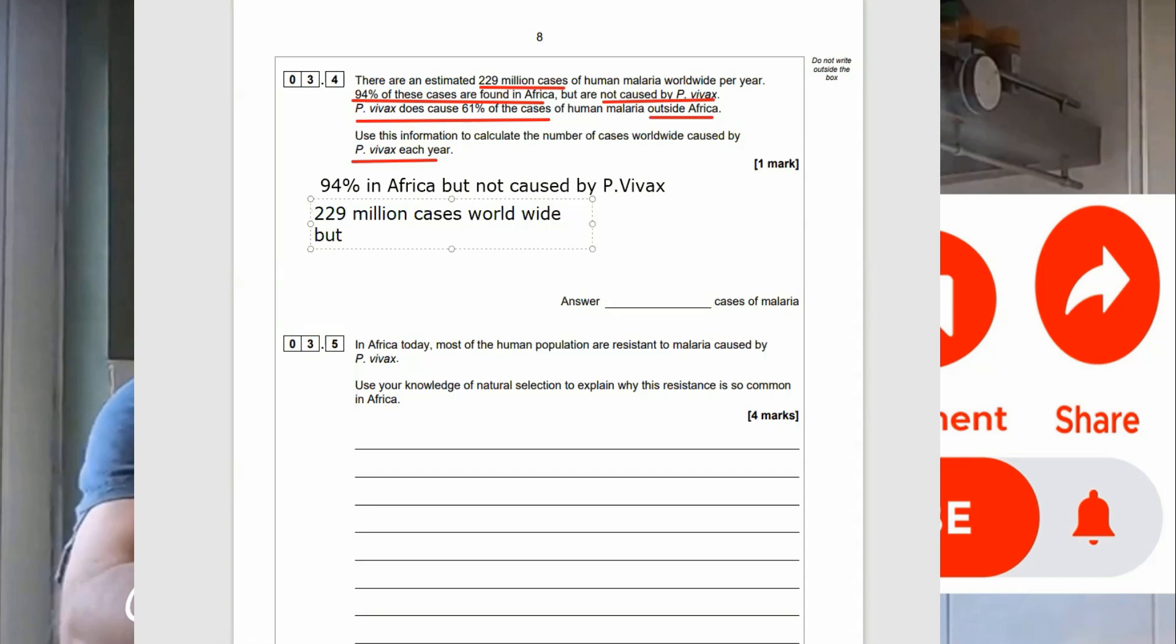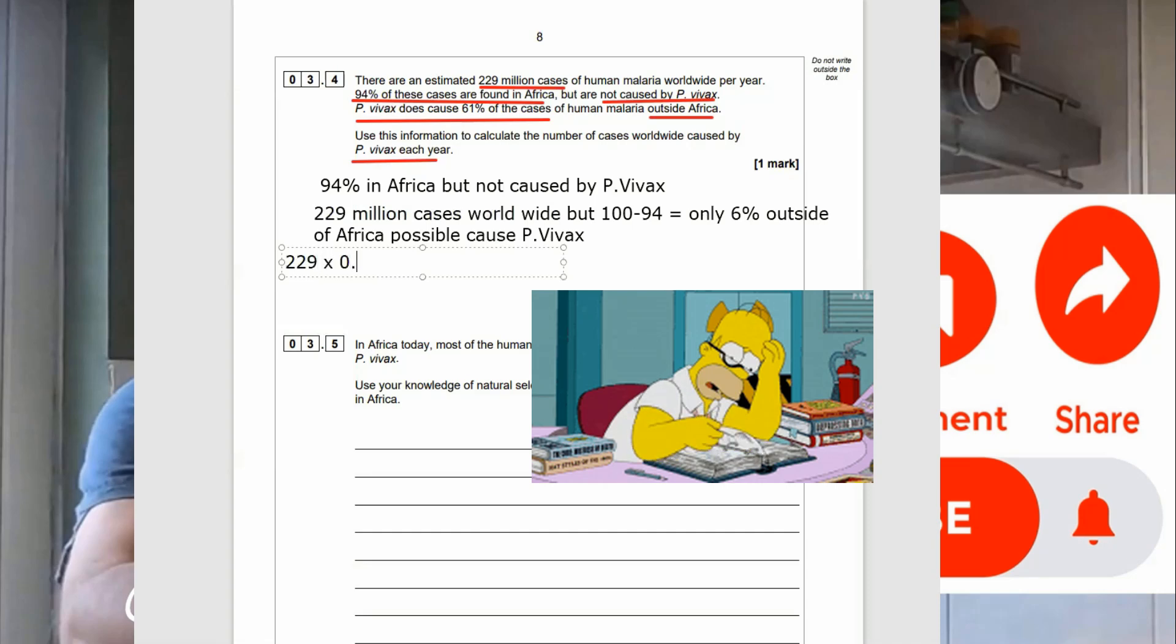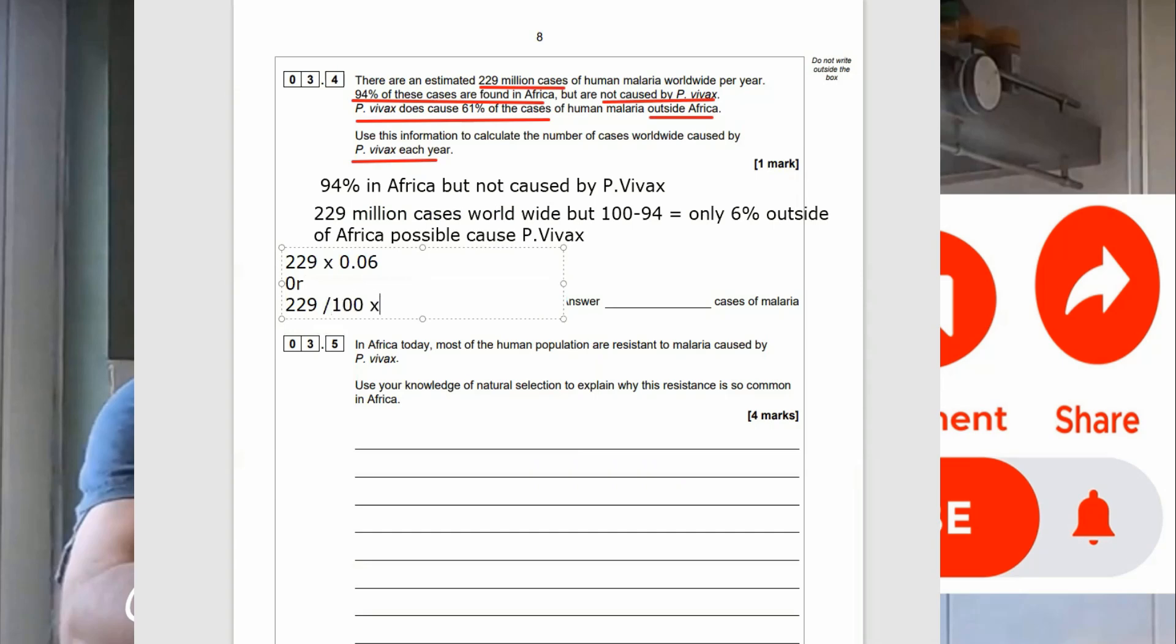Right, 94% in Africa is not caused by P-vivax. So, that means 94% of the 229 million cases worldwide are not caused by P-vivax because they're the African ones. So, we're going to go 100% take away 94% is 6%. Only 6% of the total can possibly be caused by P-vivax. So, we go 0.06 times 229, or if you like, 229 divided by 100 times 6, and this equals 13.74 million.